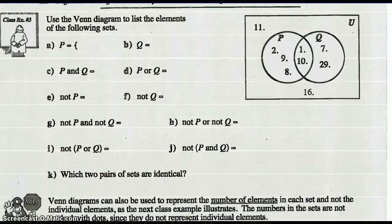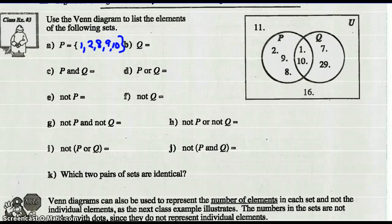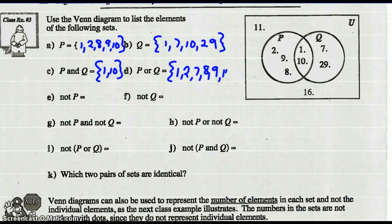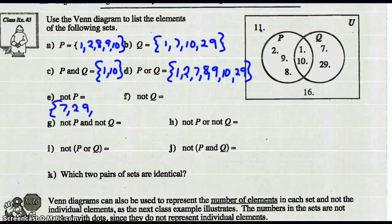Use Venn diagrams to list the elements of the following sets. The elements in set P are 1, 2, 8, 9, 10 — all the ones in that circle. The elements in set Q in that circle are 1, 7, 10, and 29. The elements in P and Q — that means the intersection, what's common — so this is going to be 1 and 10. And P or Q, that's the union — so we write those all down: 1, 2, 7, 8, 9, 10, and 29. Not P — the elements that are not P would be 7 and 29, but also the numbers outside: 11 and 16.